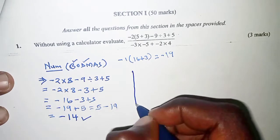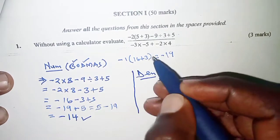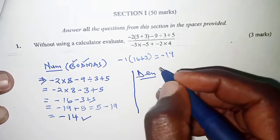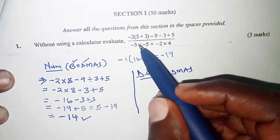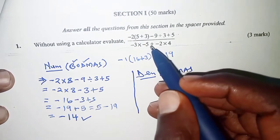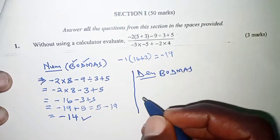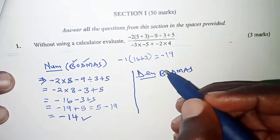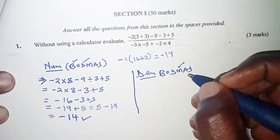Next, we'll look at the denominator. On the denominator, we also have mixed operations. So we're going to apply BODMAS again. But here we have multiplication, we have addition, subtraction, and multiplication. We're still going to follow BODMAS. There's no bracket, there's no O, there's no division. But the first one we have here is multiplication.